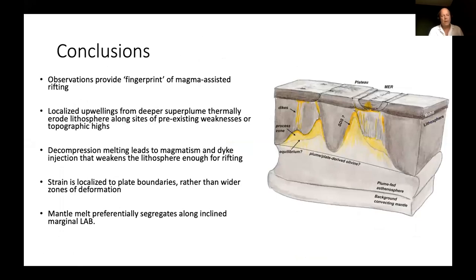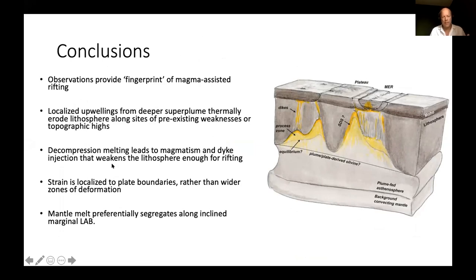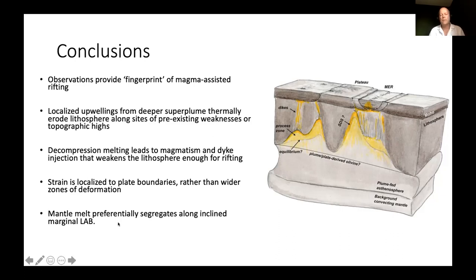In conclusion, there is a diverse set of seismic observations that provide the fingerprint of magma-assisted rifting, and other geophysical methods such as magnetotellurics show this too. Localized upwellings from a deeper superplume thermally erode the lithosphere along pre-existing sites of weakness or topographic highs. Decompression melting leads to magmatism and dike injection that weakens the lithosphere enough to facilitate rifting, and strain is localized to plate boundaries rather than a broad zone of deformation — supporting the magma system model over the stretching model, with melt preferentially segregating.